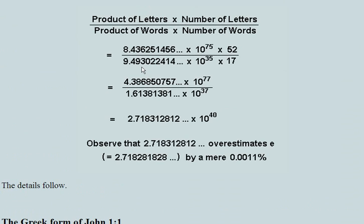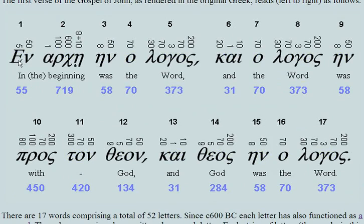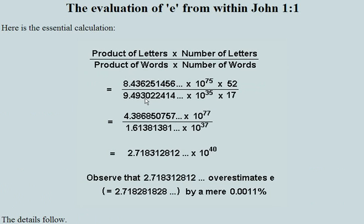For the denominator, we take the product of the words multiplied by the number of words. For example, 'en' has a value of 55, and 'beginning' has a value of 719 — adding 1 + 100 + 600 + 8 + 10. Multiplying everything out gives 4.38 × 10^77 divided by 1.61 × 10^37, and you come out with the value of e: 2.718. This overestimates e by a mere 0.0011 percent — so one calculation underestimates and the other overestimates.